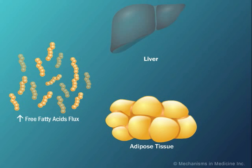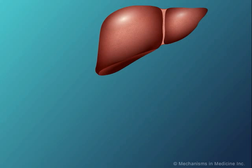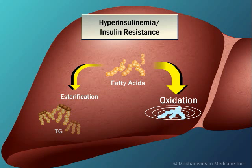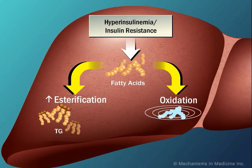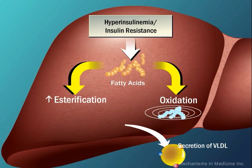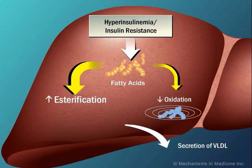Free fatty acids released from adipose tissue circulate in the blood towards the liver. The free fatty acids are taken up by the liver, where hepatocytes channel fatty acids into secretory pathways. In a state of hyperinsulinemia, there is increased synthesis of triglycerides and esterification, shown by the thickened left arrow, with consequent high rates of very low-density lipoprotein secretion into the bloodstream. At the same time, there is decreased oxidation of free fatty acids, shown by the thin right arrow.